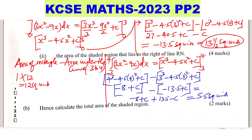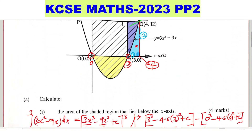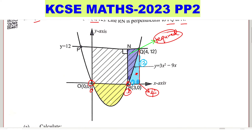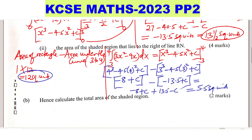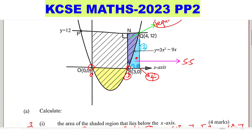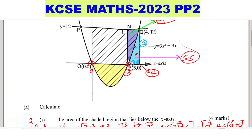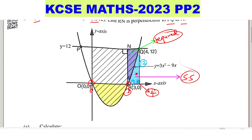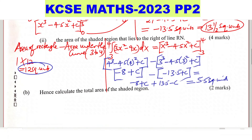So we have the area of the rectangle, which is 12, and the area under the curve between 3 and 4, which is 5.5. Therefore, the area of the shaded region to the right of line RN is 12 minus 5.5, which gives 6.5 square units.